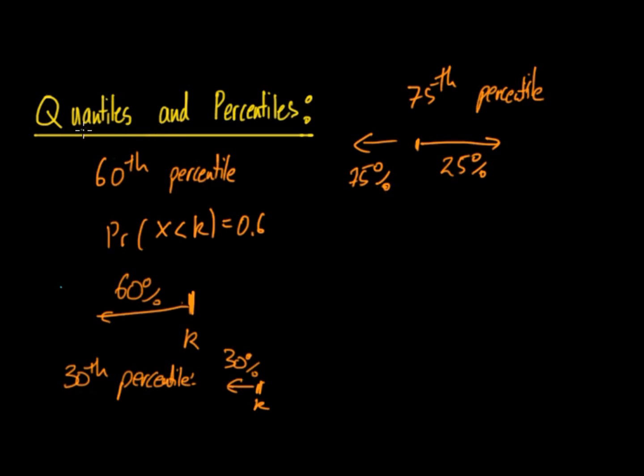So how does that relate to quantiles? Well quantiles are basically the exact same thing but instead you're represented by 0.6 quantile that would be the 0.3 quantile and that would be equal to the 0.75 quantile.